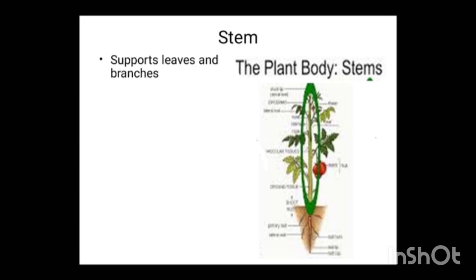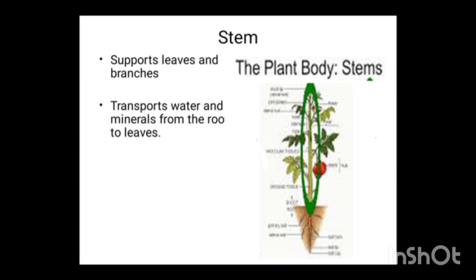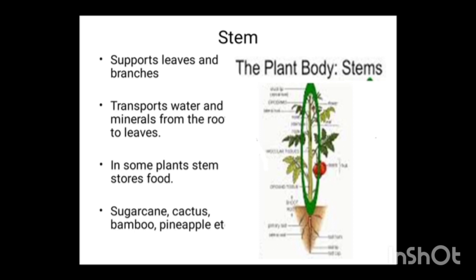Now, next is stem. It supports the leaves and branches. It transports water and minerals from the root to leaves. In some plants, the stem stores food — for example, sugarcane, cactus, bamboo, pineapple, etc.